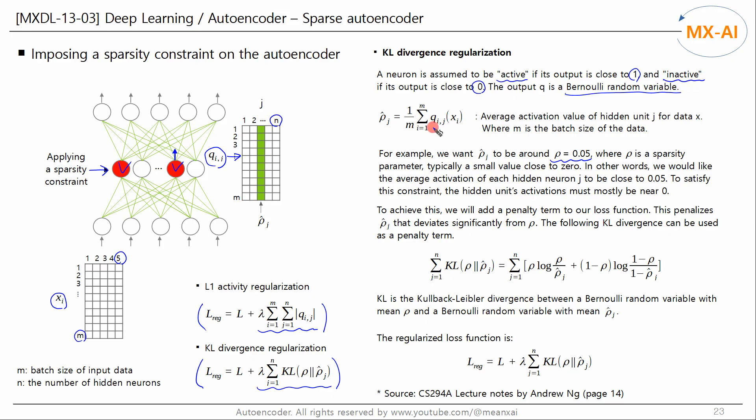Let the output of the jth neuron in the hidden layer for the ith data point XI be QIJ. M is the batch size of data. When m pieces of data X are input to the neural network, m pieces of QIJ are output to the encoder. Let the average of QIJ be rho hat j. This notation means the value of QIJ when the data point XI is entered.